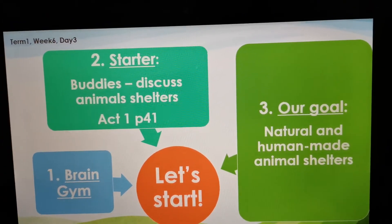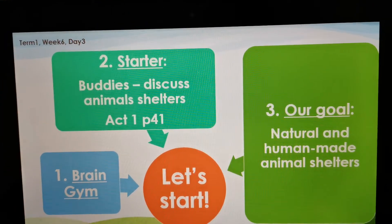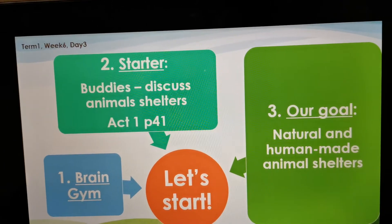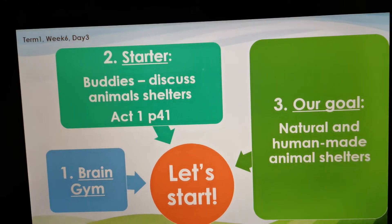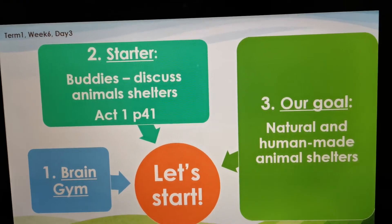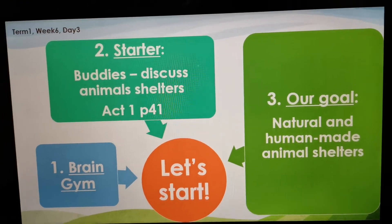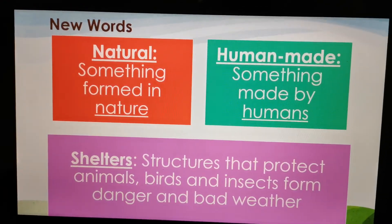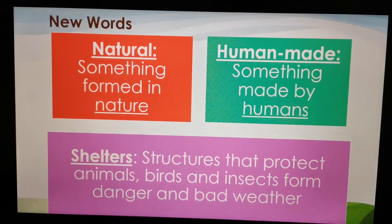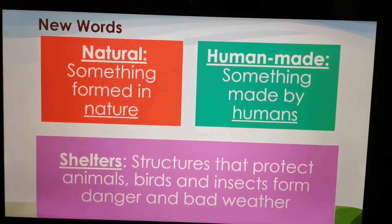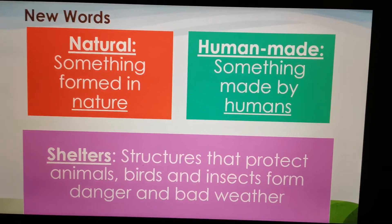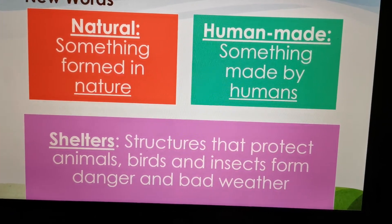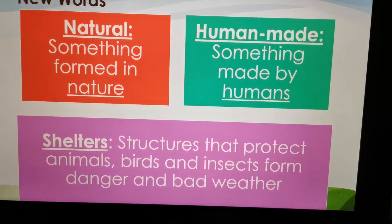Our goal is to learn about Natural and Human-Made Animal Shelters, and we have to be able to identify which ones are Human-Made and which ones are Natural. So let's quickly look at our three keywords. Natural — something formed in nature. Human-Made — something made by humans. Shelters — structures that protect animals, birds, and insects from danger and bad weather.